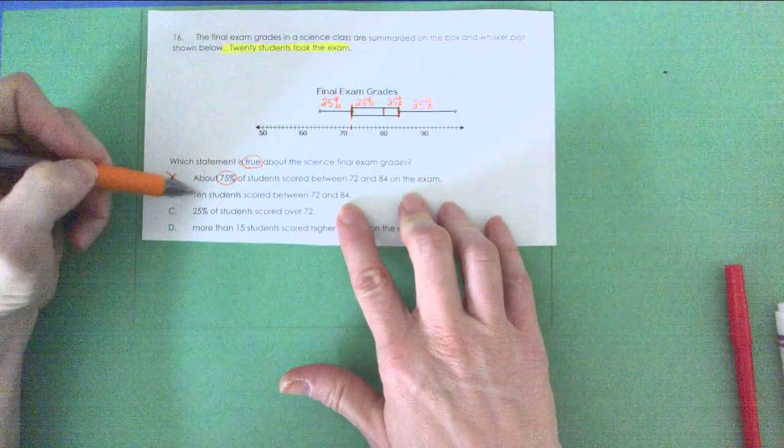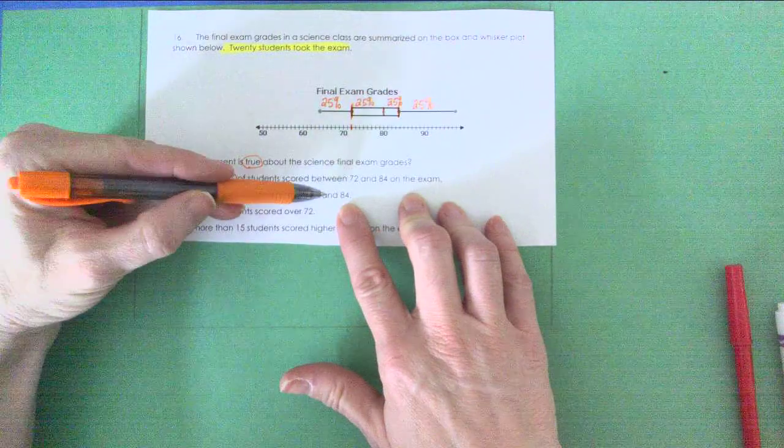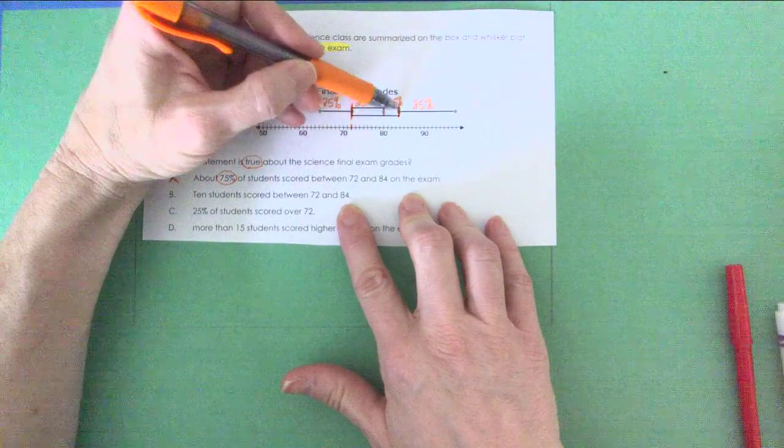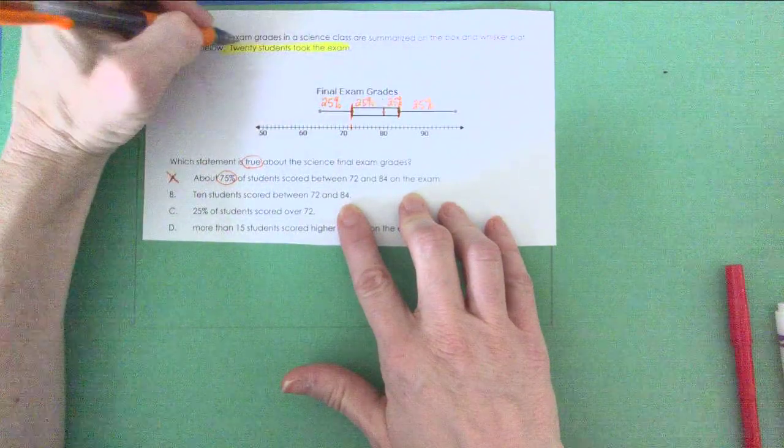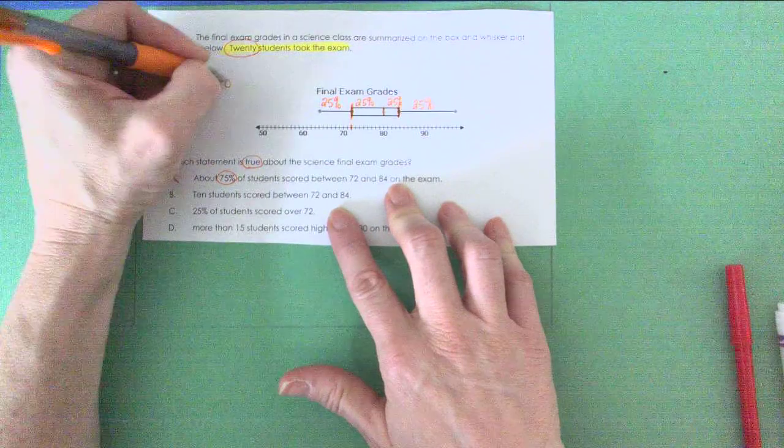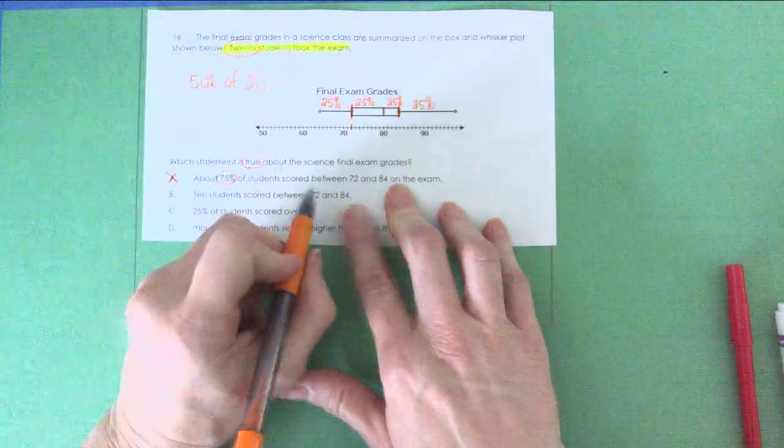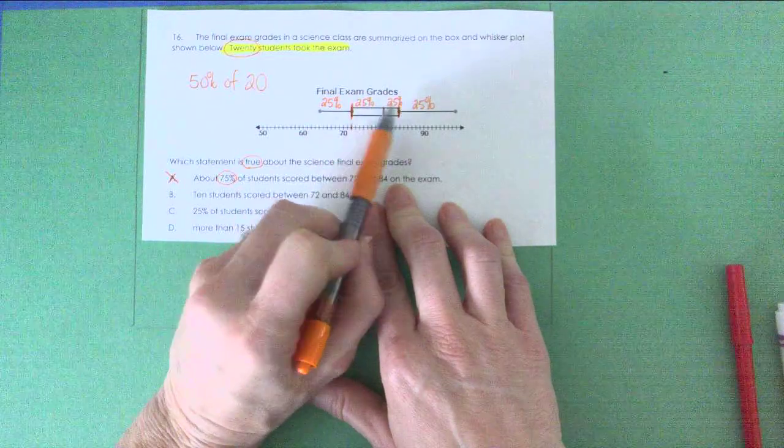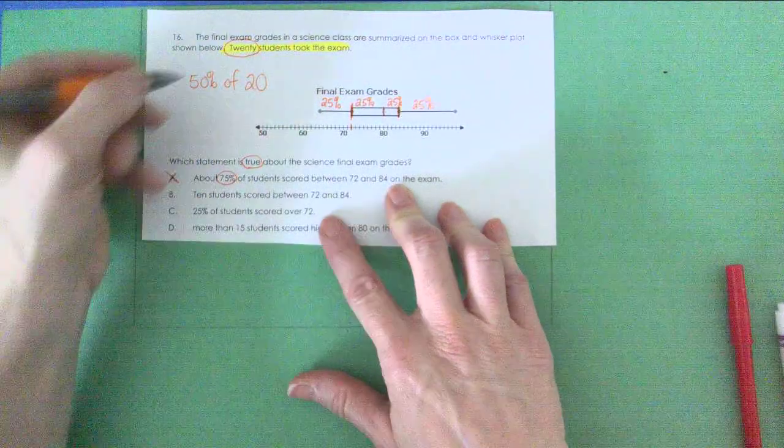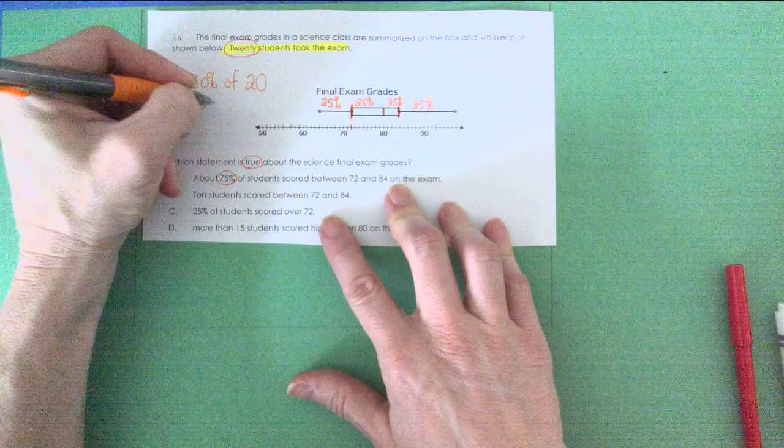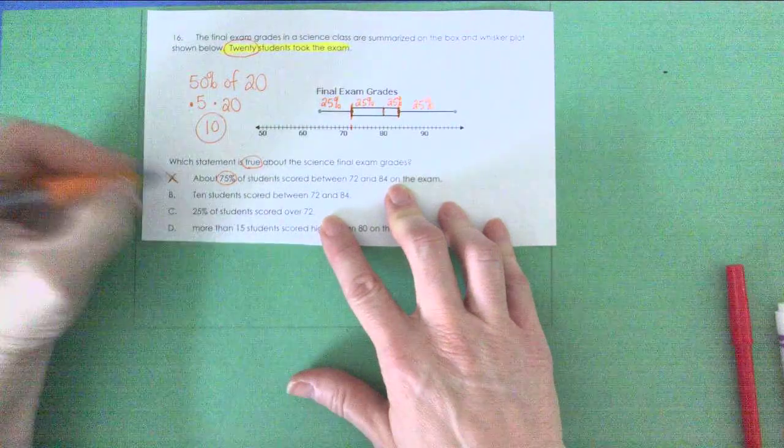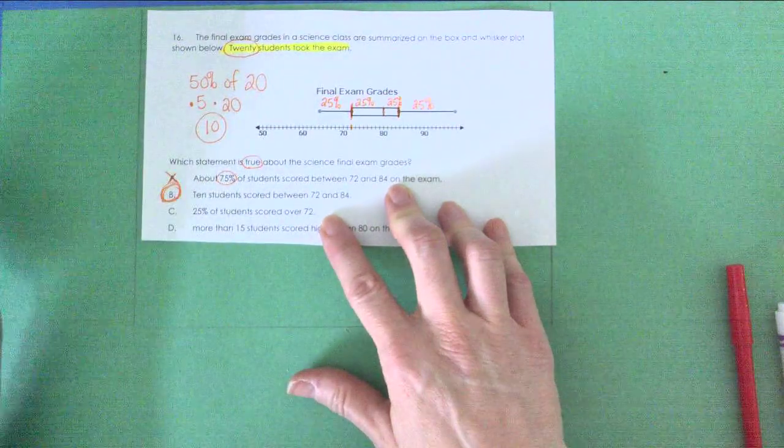Let's go to letter B. Ten students scored between 72 and 84. So they're still in that same section of the graph. If 50% of my students are in here and I've got 20 students who took the exam, let's take 50% of 20. Between 72 and 84 represents 50% of my data. 50% of 20 is the same as 0.5 times 20. If I take 0.5 times 20, I get 10. Bingo. I'm going to go with B. Ten students did score between 72 and 84.